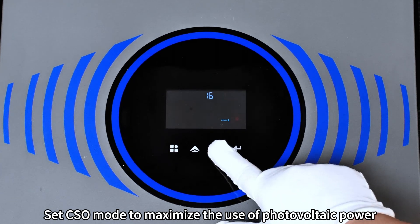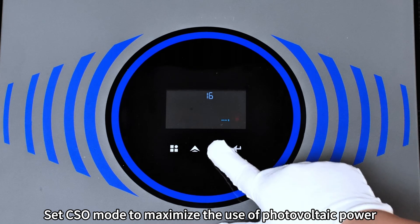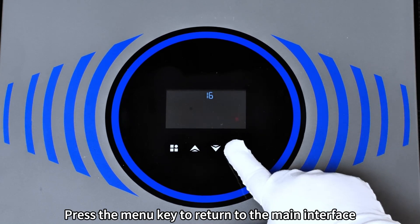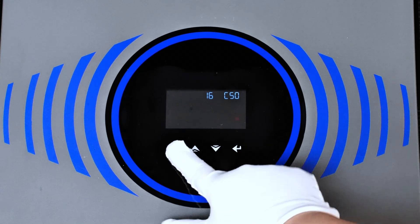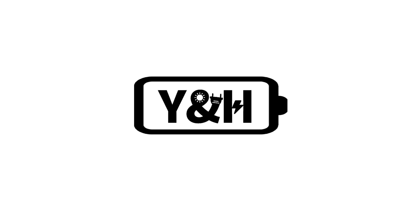Set CSO mode to maximize the use of photovoltaic power. Press enter to confirm. Press the menu key to return to the main interface. Thank you for watching, see you next time.